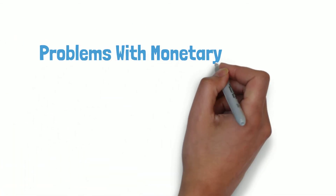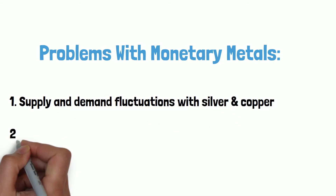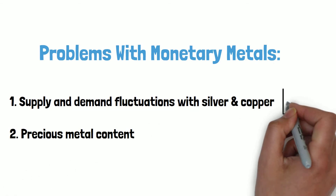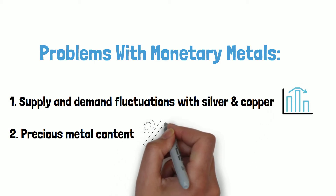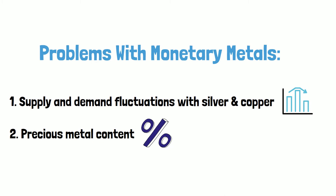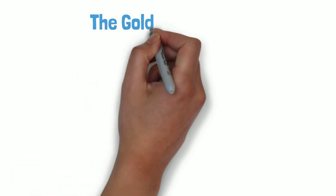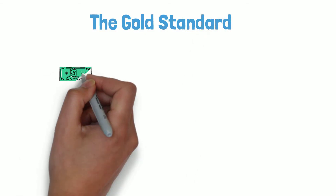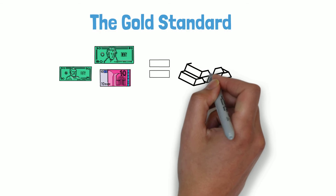It turns out there are two problems with monetary metals. One: the fluctuations in supply and demand of silver and copper. A more serious problem was that governments and counterfeiters often reduced the precious metal content in coins, causing the value to decline. The reduction in metal content of the coins compromised the purity and soundness of the money.